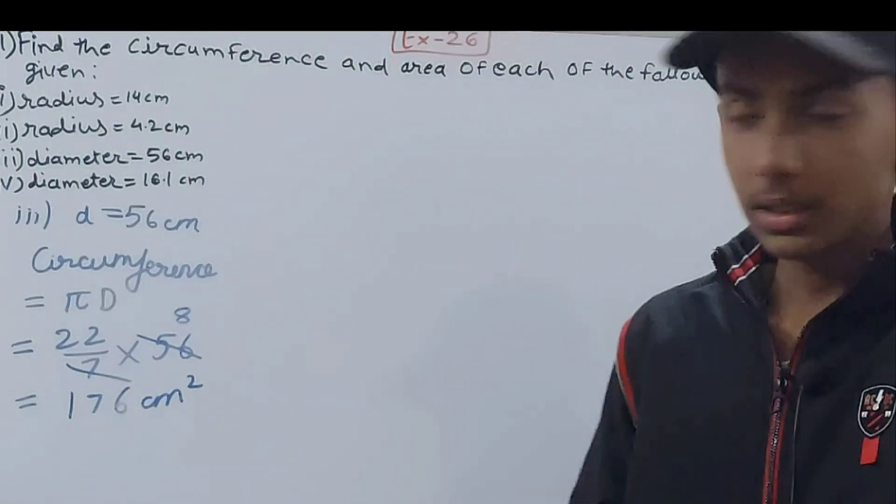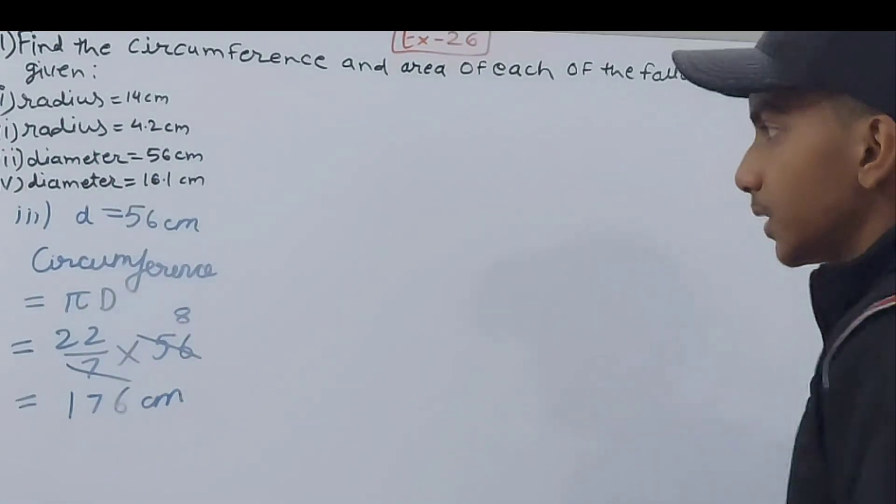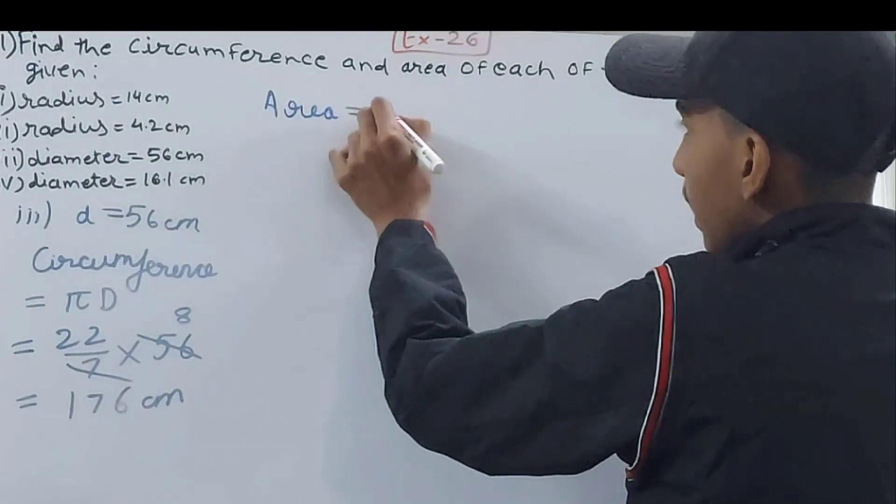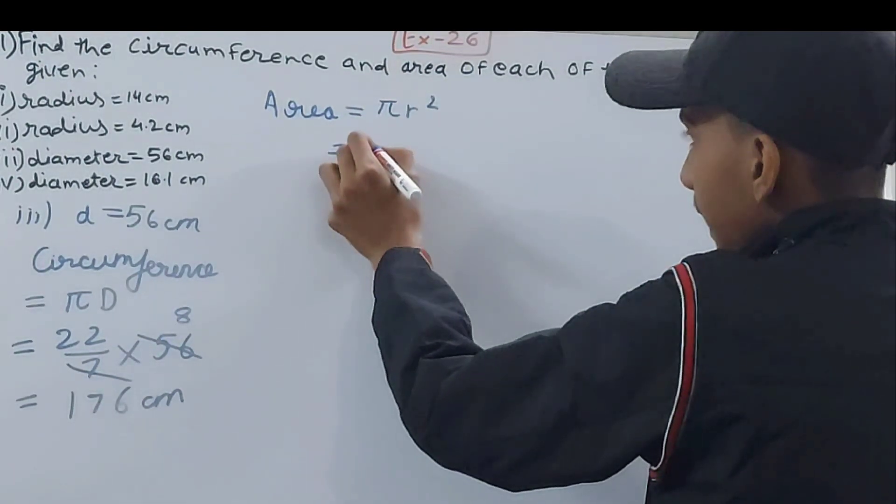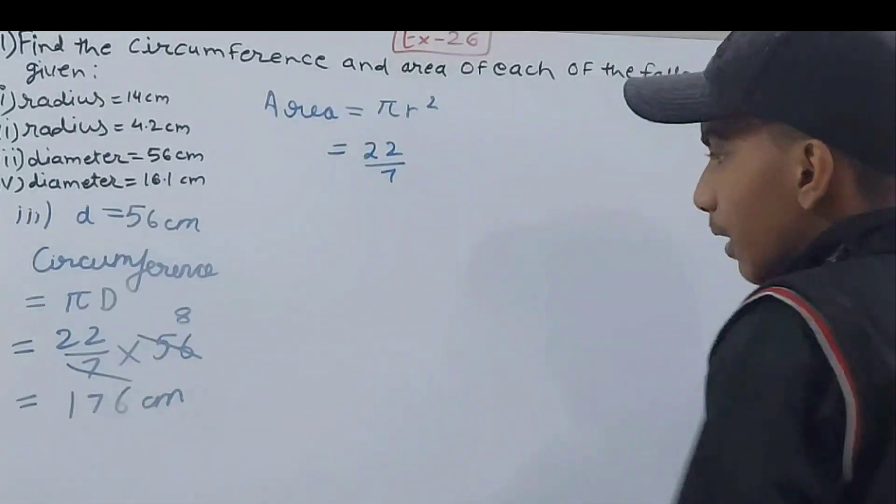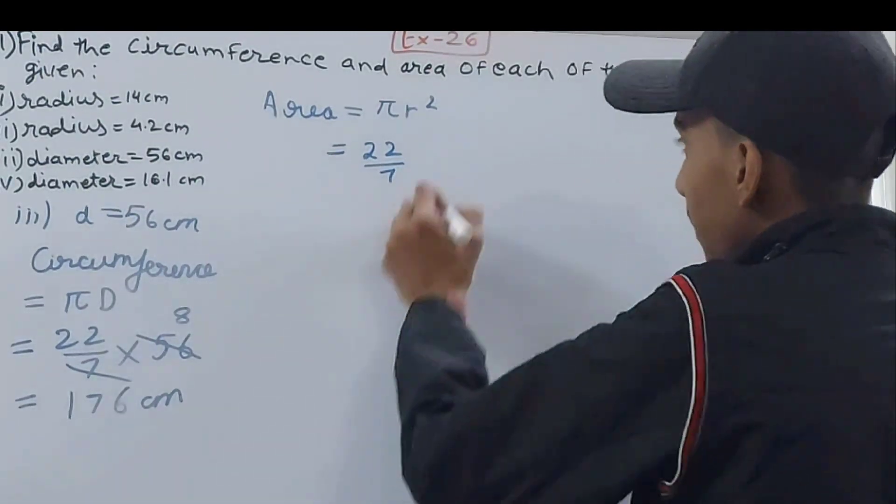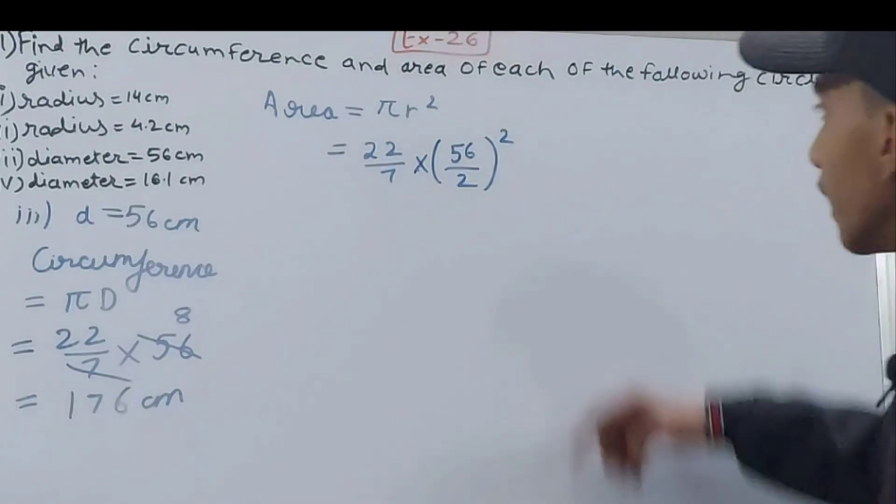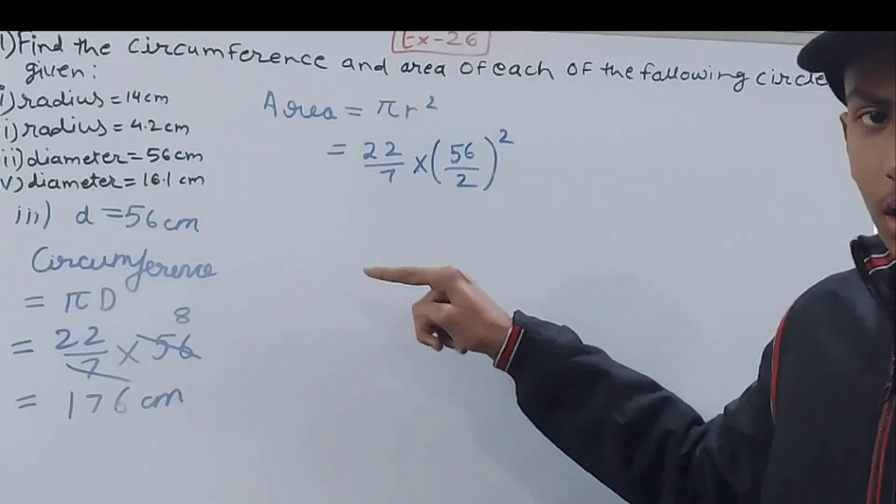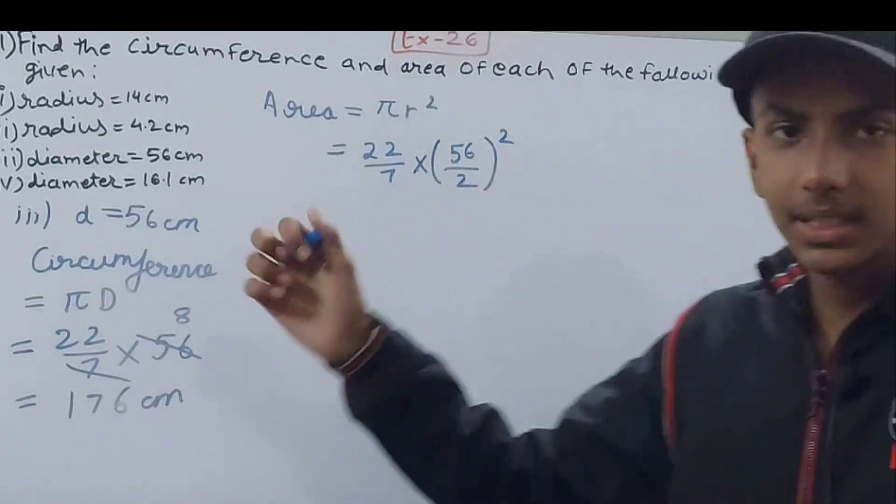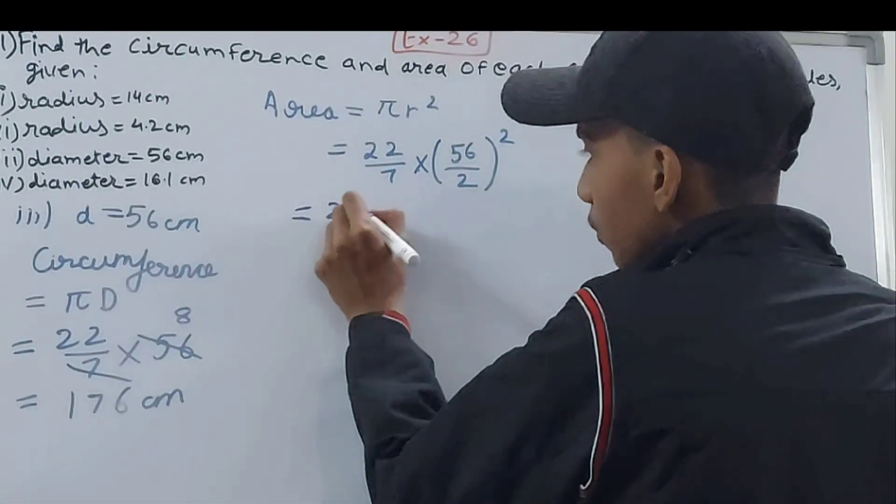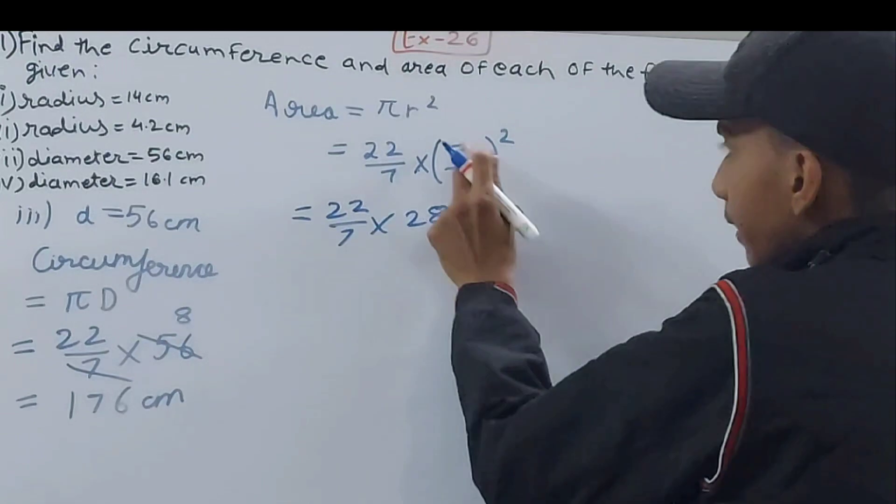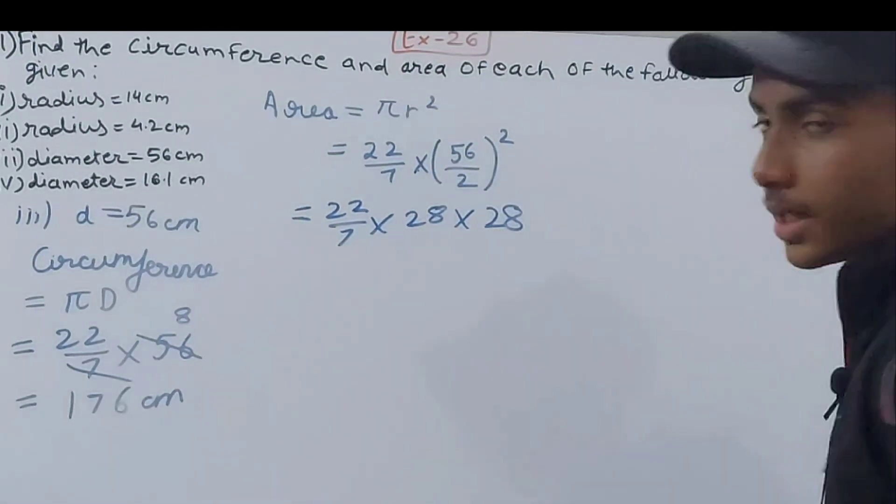Now the area of this circle. For area we have to do πr². π is 22/7, now r, how will you calculate r? Diameter you have is 56, so r = 56/2, the whole squared. Half of 56 is 28 and that will be squared. 22/7 × 28 × 28.